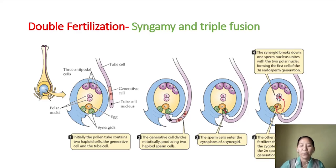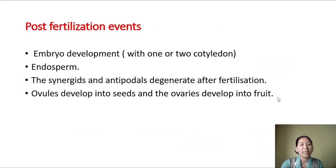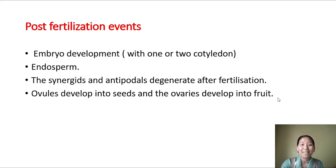After fertilization, the zygote develops into an embryo, and the embryo further develops into a multicellular structure with differentiation into various body parts. The triploid primary endosperm nucleus develops into endosperm. Synergids and antipodals degenerate. The ovule develops into a seed and the ovary develops into a fruit, so the seeds are enclosed within the fruit, unlike gymnosperms where the seeds are naked.